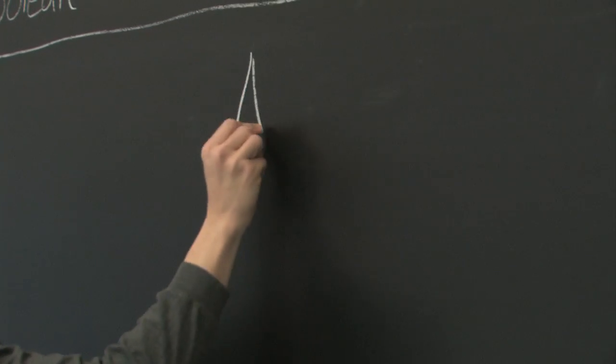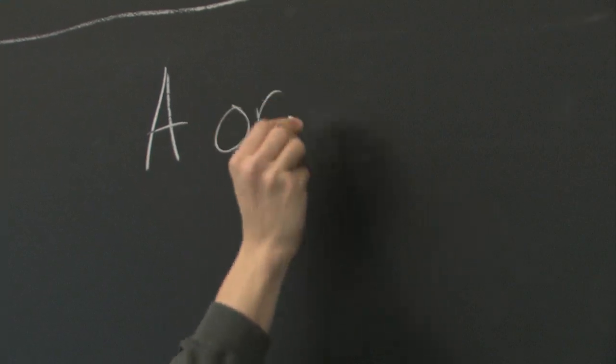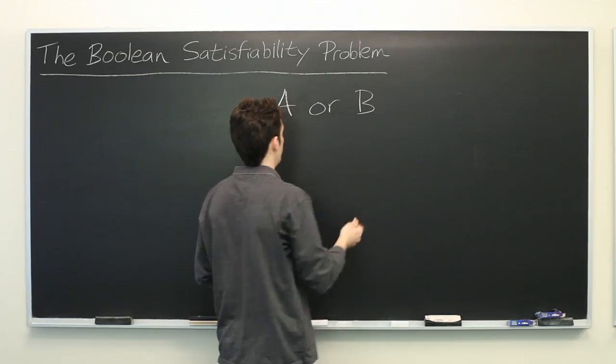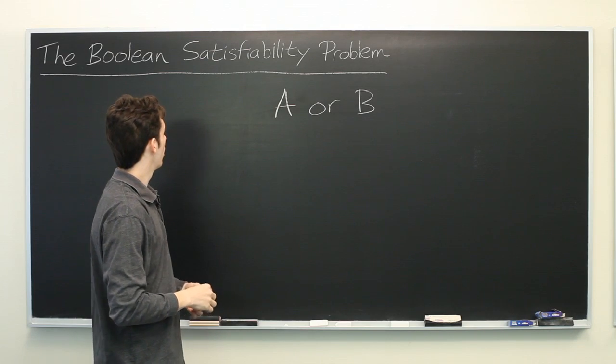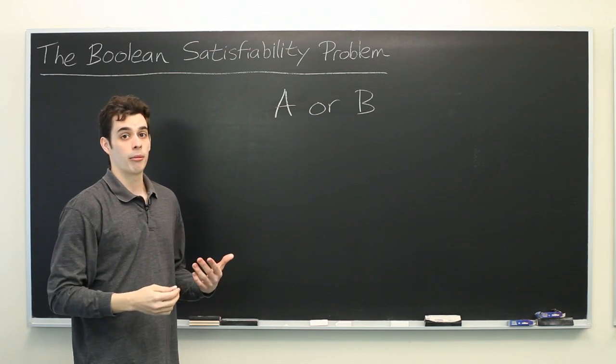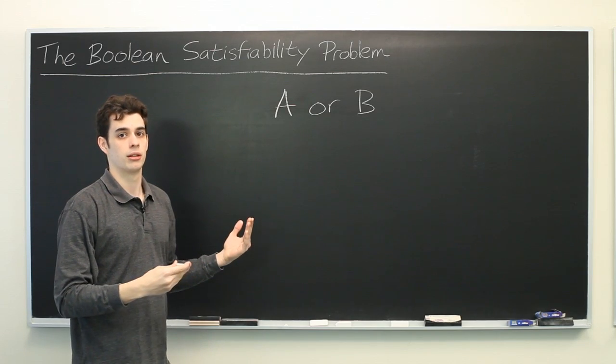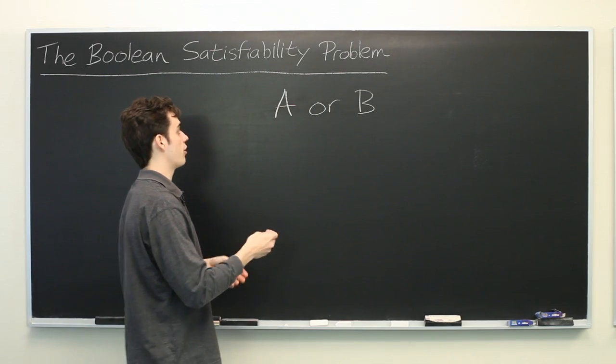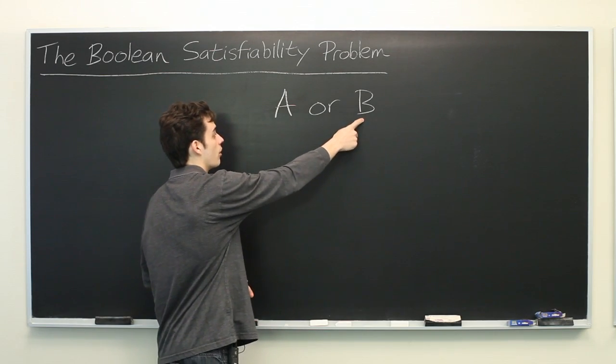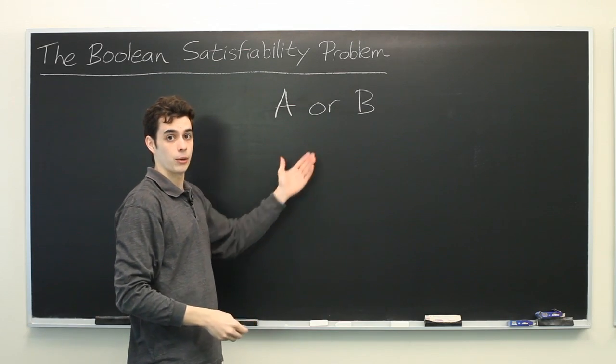Suppose that you are given some Boolean expression, say A or B. It is short but it is a perfectly valid expression. The Boolean Satisfiability Problem is: given such an expression, is there an assignment of Boolean values true or false that we can give to our variables such that this evaluates to true?